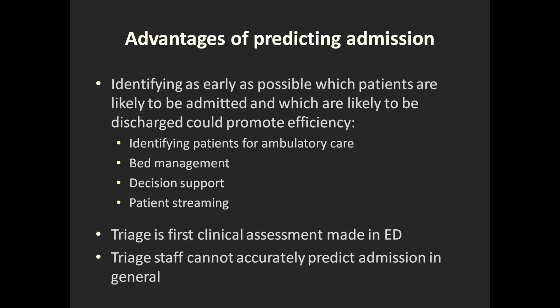The first clinical assessment in ED is triage, so it would be ideal to make a prediction at that point. However, we know from historical studies that triage staff can't accurately predict admission in general. They may be very accurate in obvious cases — a splinter versus raging meningococcal sepsis — but the majority of patients aren't at either extreme. When there's some dubiety, nurses are just not that accurate at predicting admission at the point of triage.